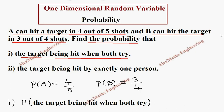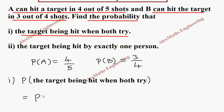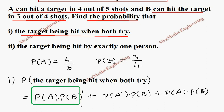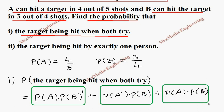P(target being hit when both try) equals: first case, A hits the target and B does not hit the target — that is P(A) × P(B'). The target is hit because A hits it even though B does not. Or if A does not hit, it is P(A') × P(B) — since B hits the target, the target is still being hit. And if both hit it, it is P(A) × P(B).